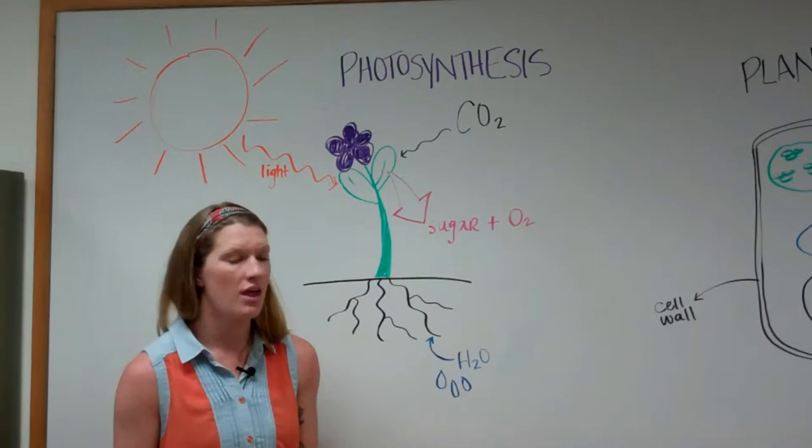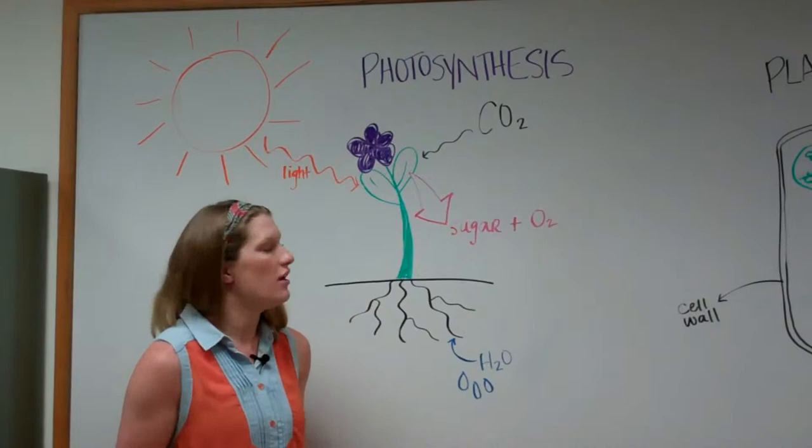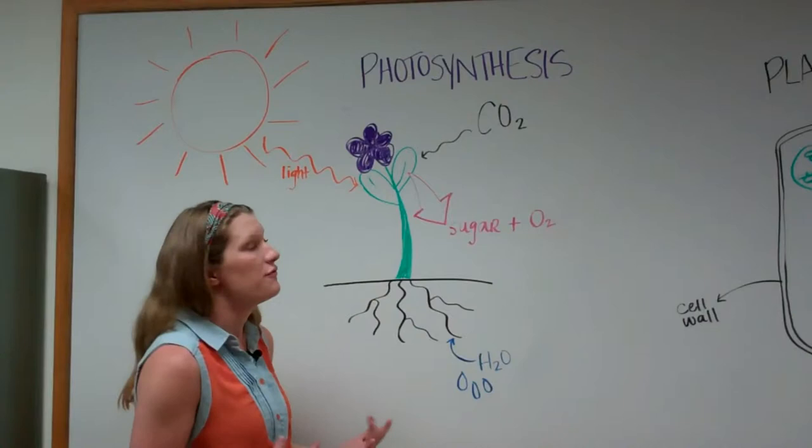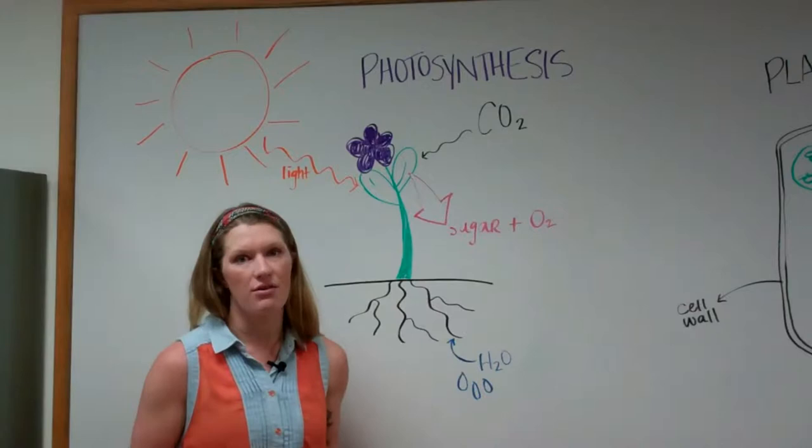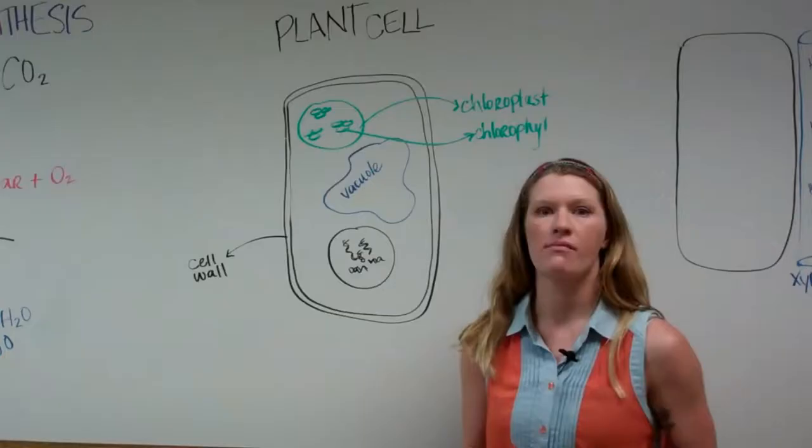Photosynthesis allows plants to make sugars, and this serves as an energy source so that plants can perform all the functions that they need to survive. Photosynthesis is probably one of the most important functions of plants, so let's look more closely at how this process works.